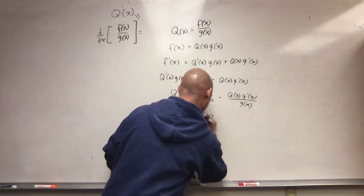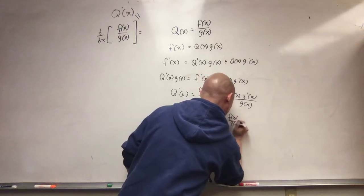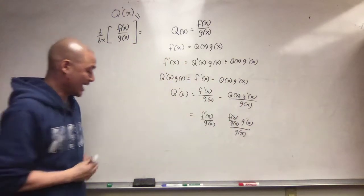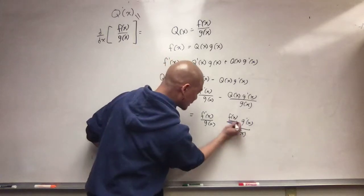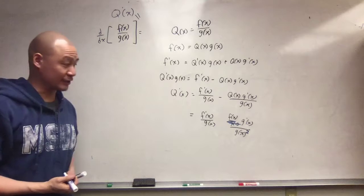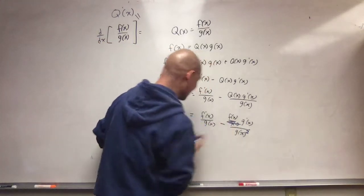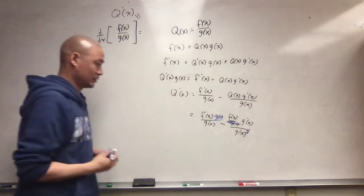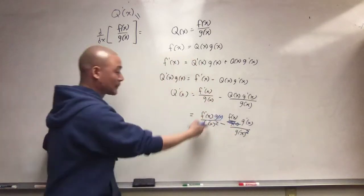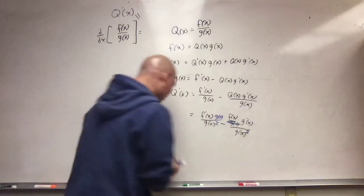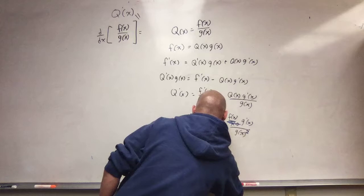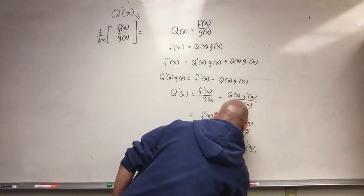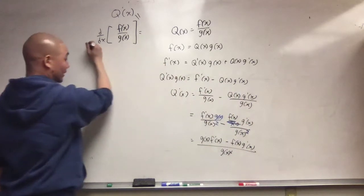And I can just shift this g of x down to make sure that that's g of x squared. There's a minus between these guys. And so, it would be convenient to combine this all into one expression, so I can multiply this top and bottom by g of x, so I can get a common denominator. And I get g of x, f prime of x, minus f of x, g prime of x over g of x squared. And that's what I get.